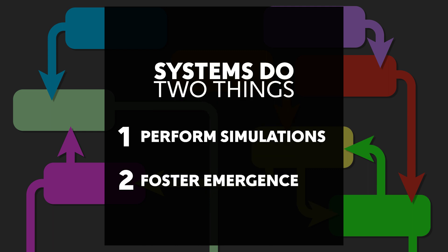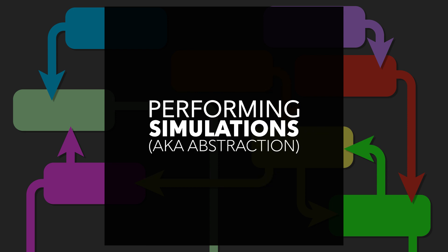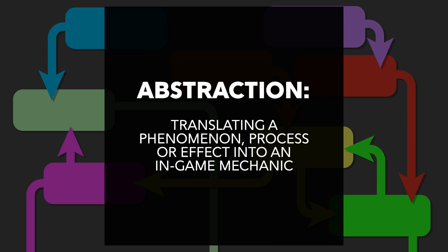Systems typically perform two functions in games: they perform simulations and foster emergence. We'll start with simulations, which are sometimes called abstraction. Abstraction is really the idea of taking a feature of the real world and translating it so that it makes sense in a game.